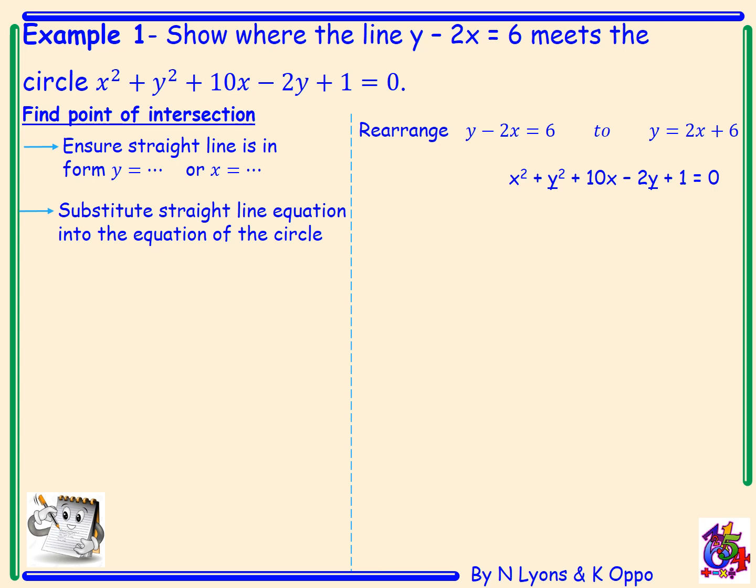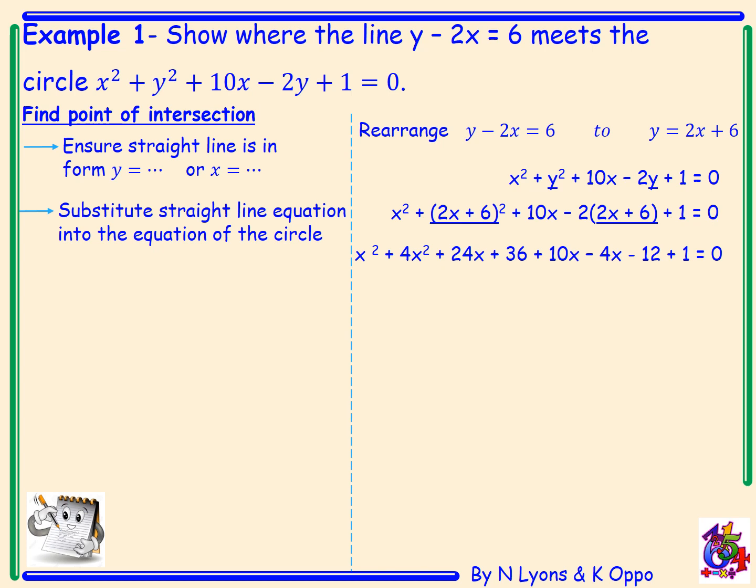From there we substitute into our circle. Wherever we see a y, we replace it with 2x plus 6. That gives us x squared plus (2x plus 6) all squared plus 10x minus 2 times (2x plus 6) plus 1 equals 0. You can expand the brackets at the side of your page and bring your answer back in. Once expanded, we get x squared plus 4x squared plus 24x plus 36 plus 10x minus 4x minus 12 plus 1 equals 0.